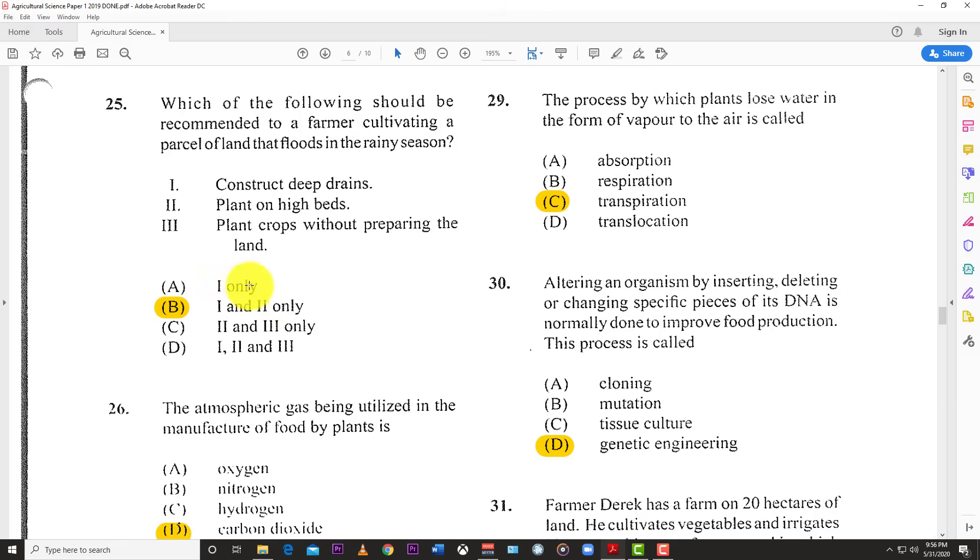Number 25: What should be recommended to a farmer cultivating land that floods in the rainy season? The answer is 1 and 2 - construct deep drains and plant on high beds. You want to plant on high beds and make channels between beds to channel water away. Drainage is very important. Planting crops without preparing the land is not feasible - you need to prepare your land every time.